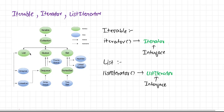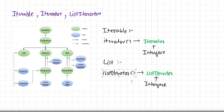There is one more interface — the list interface. List interface defines its own method, that is list iterator. If you look at the diagram carefully, list interface extends collection, and collection extends iterable. So collection already has the iterator method, and list has its own method list iterator. This means list ultimately has two methods: iterator and list iterator. ArrayList and LinkedList both implement iterator as well as list iterator.